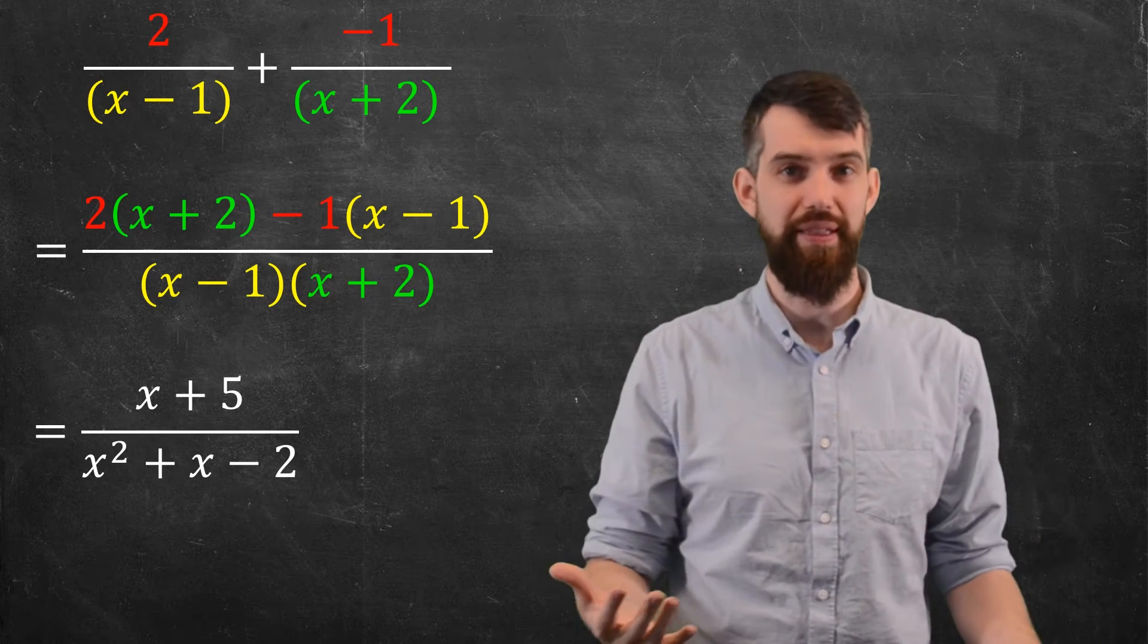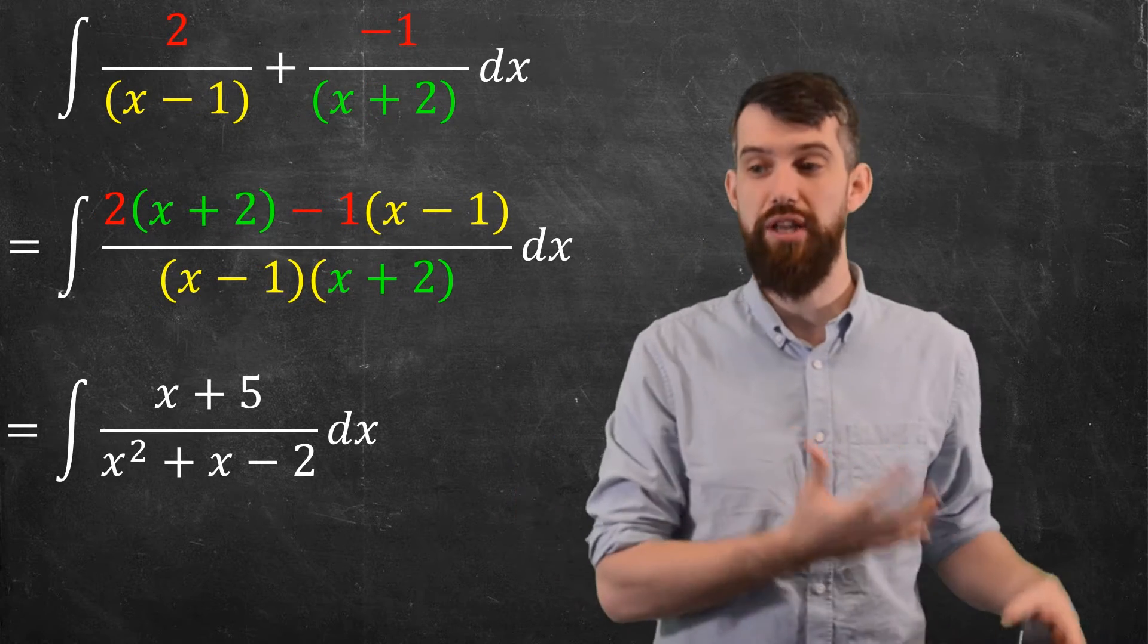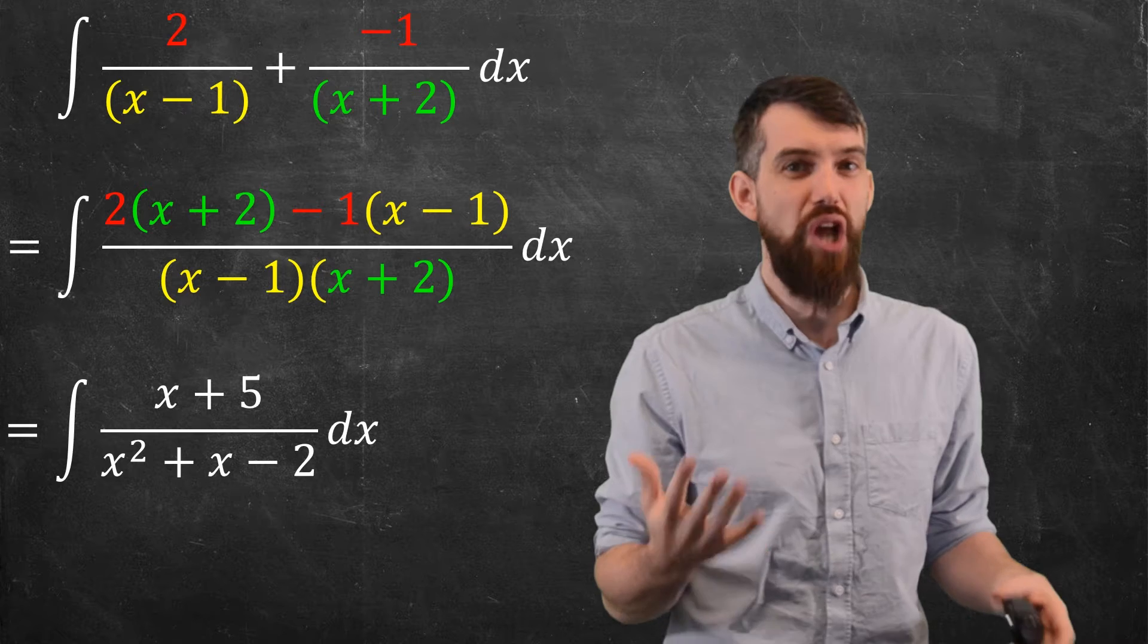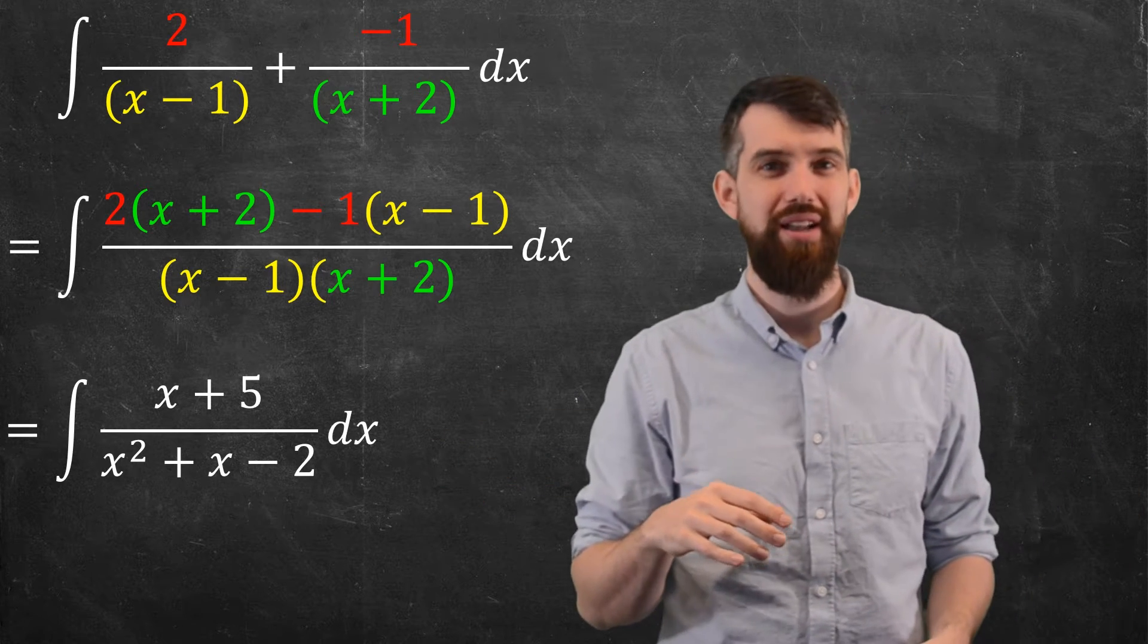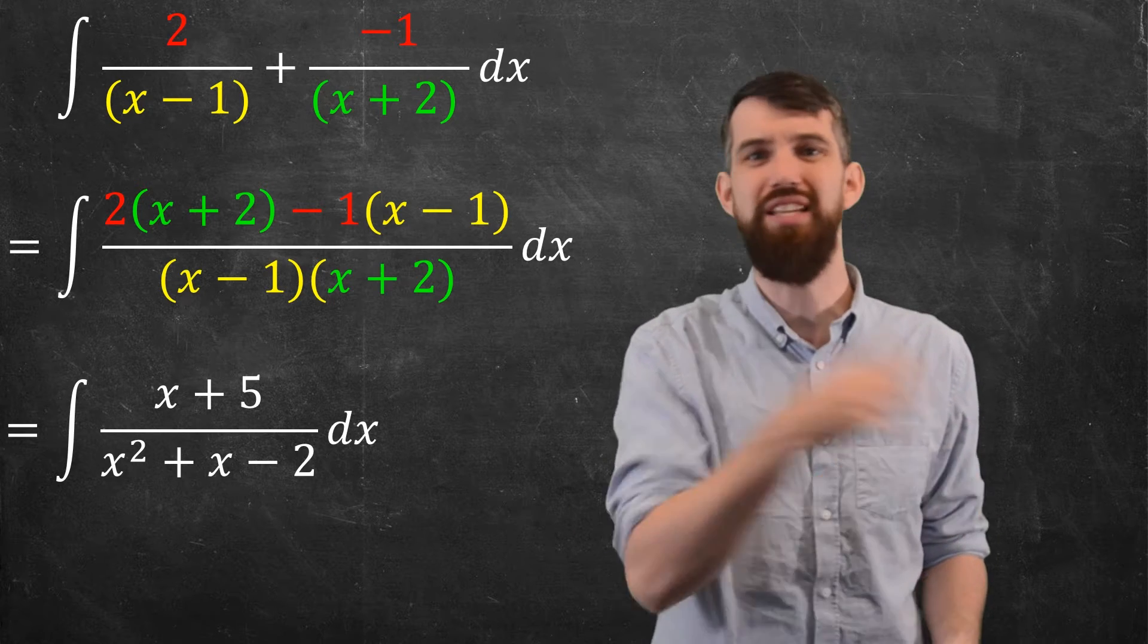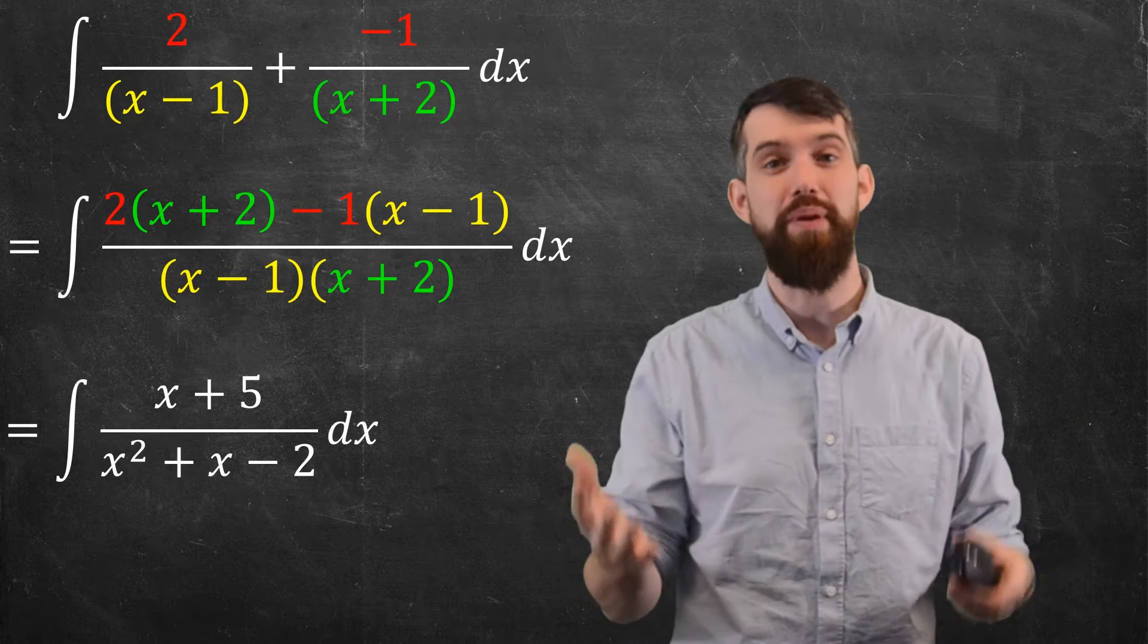Now, imagine you had to integrate this. Actually, let me integrate all three of these. Which of these would be easier to integrate? I don't actually know right off the top of my head how to integrate this bottom one here, setting u to be the denominator. The du doesn't match the numerator. Maybe I could think of a way to do it, but it would be a bit challenging.